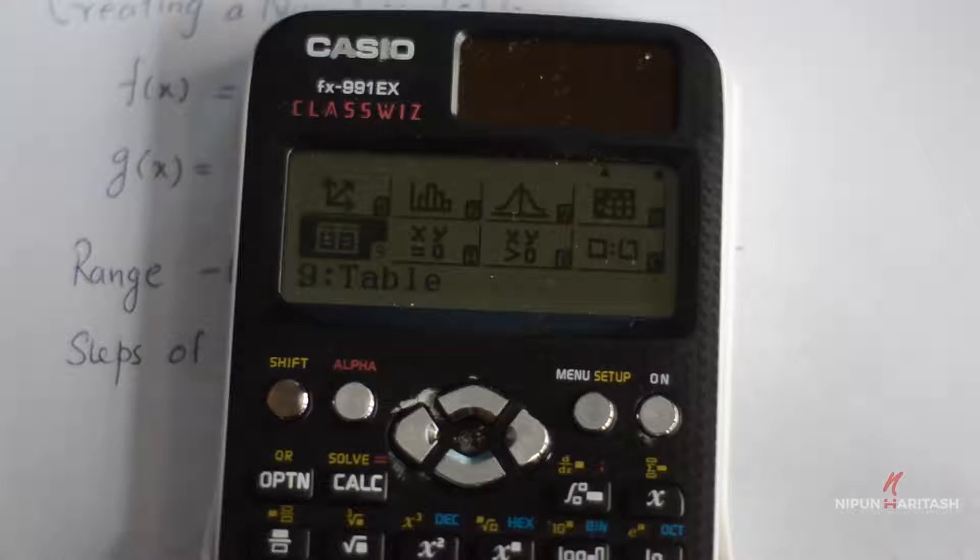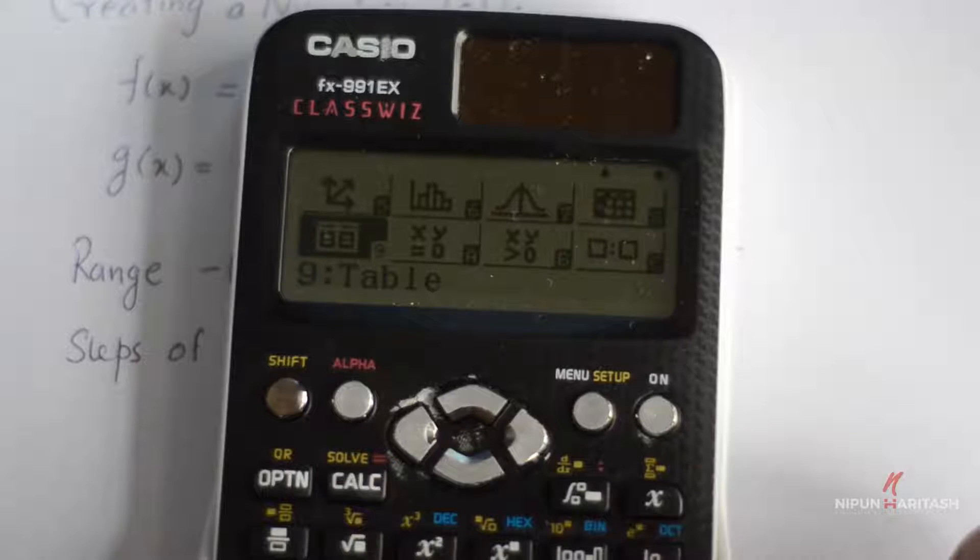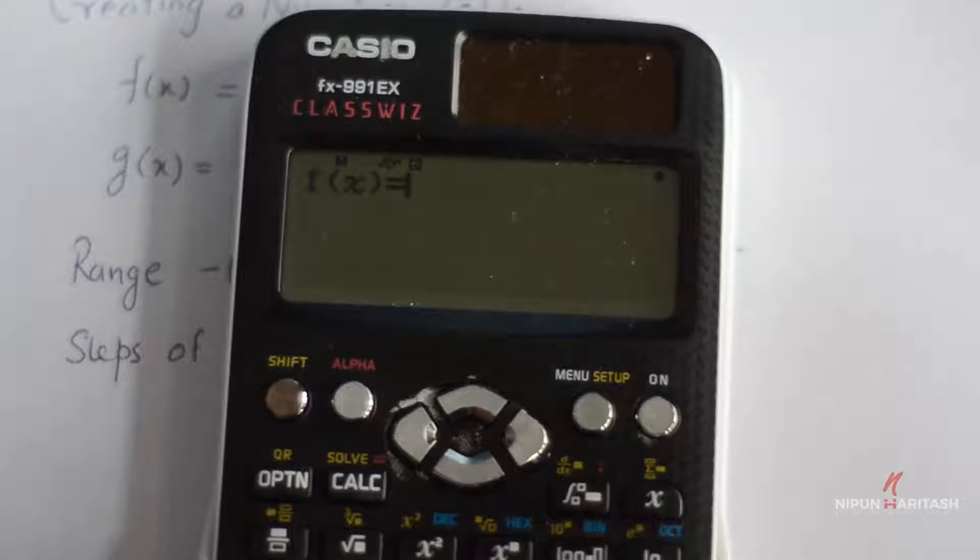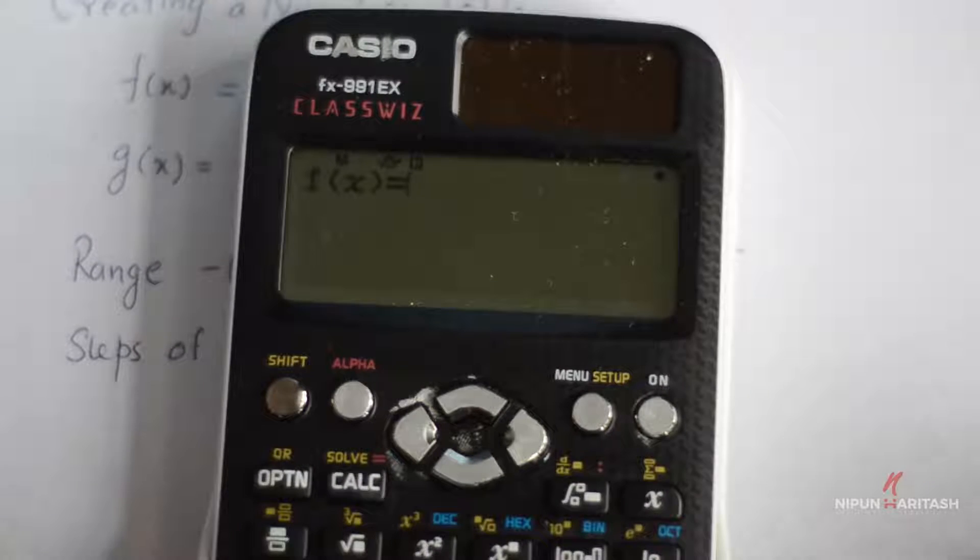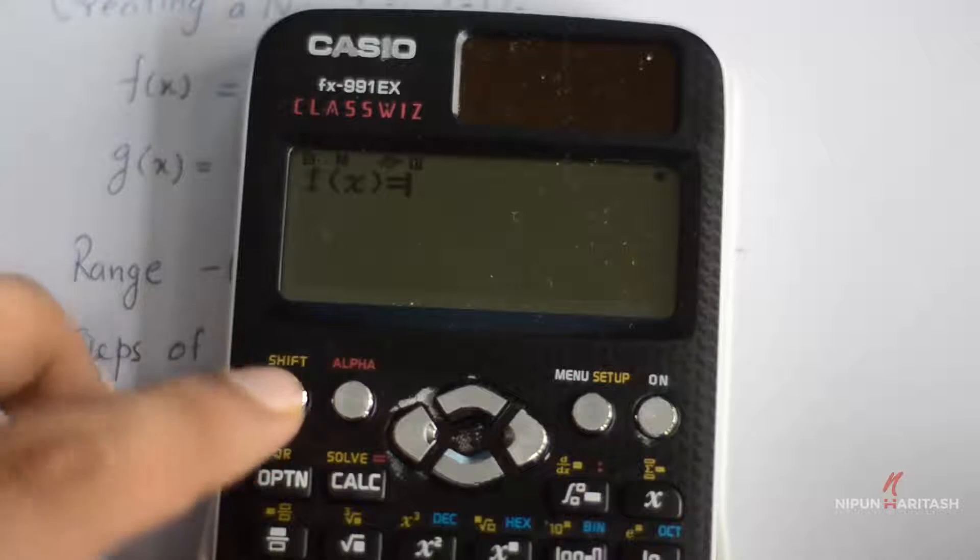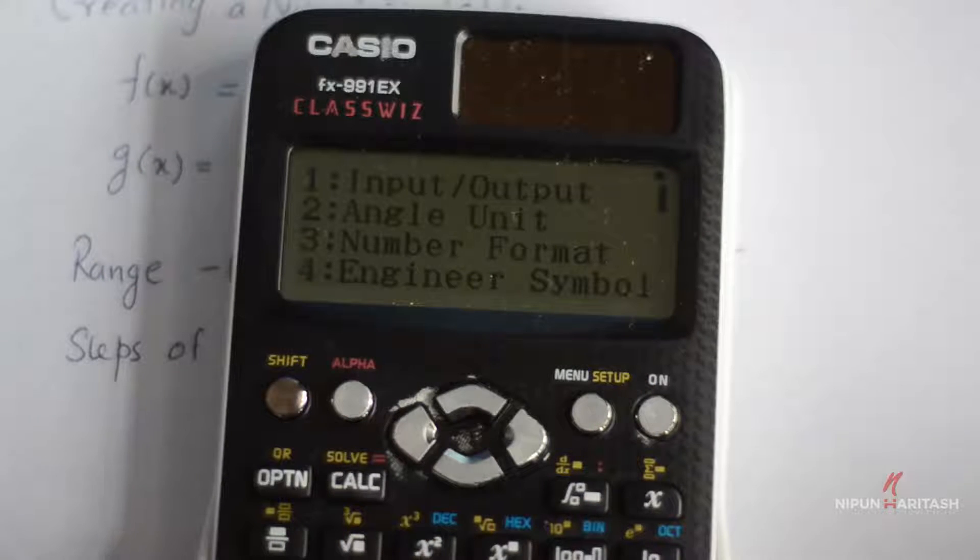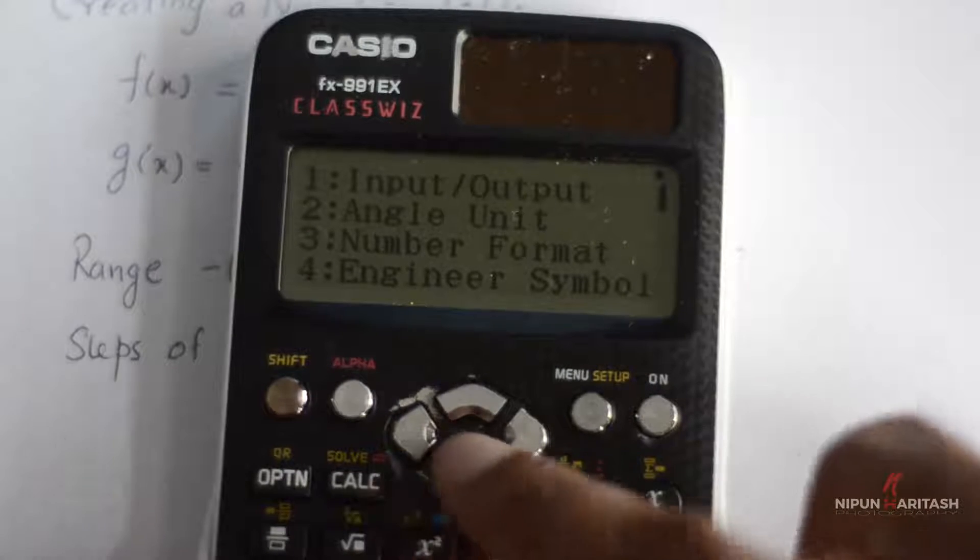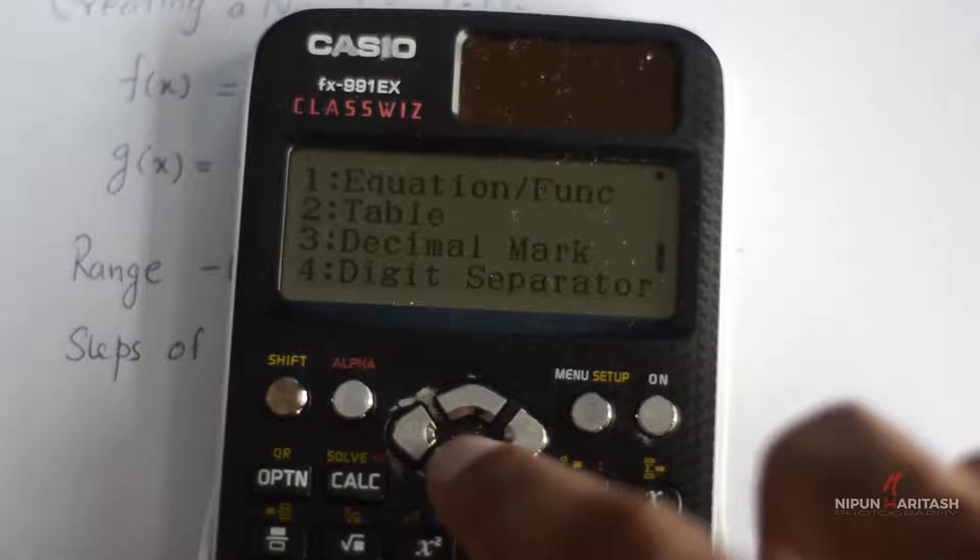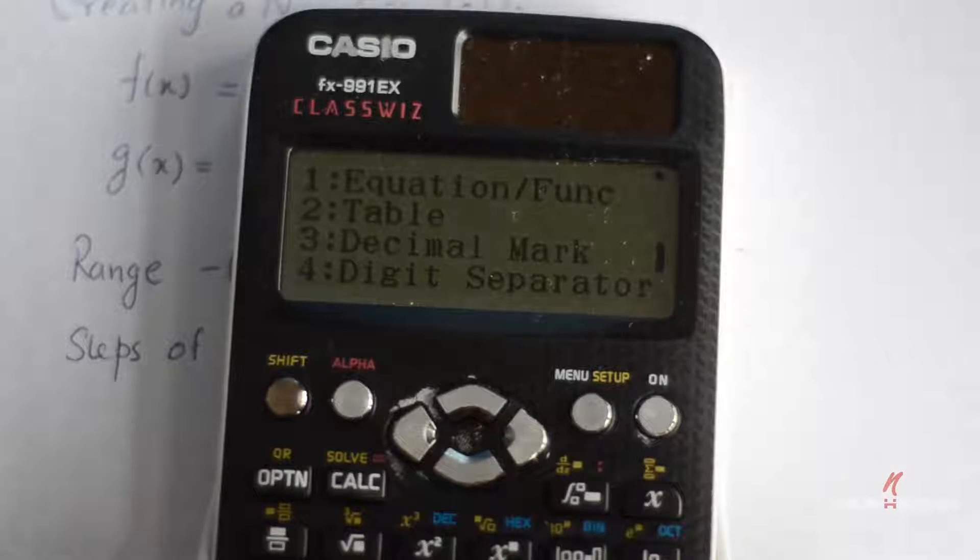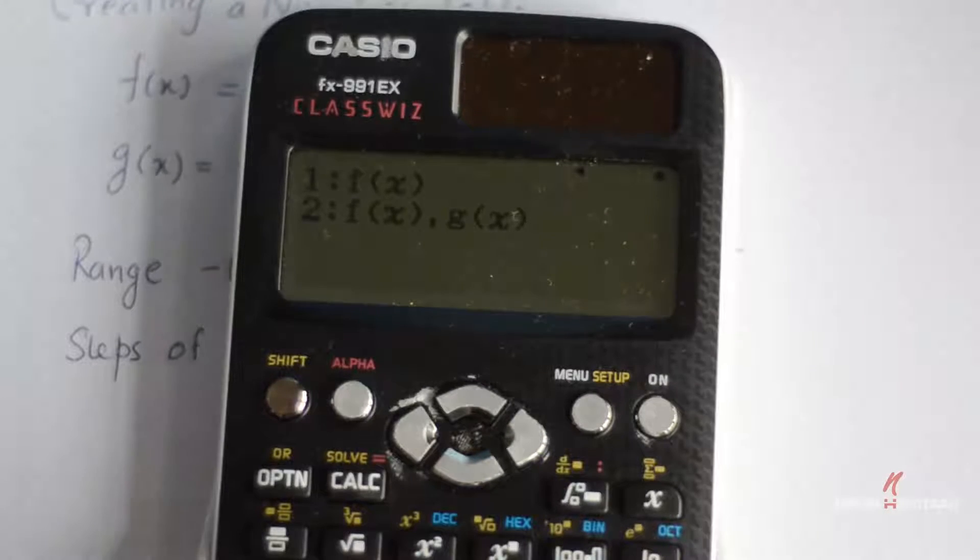You can press 9 or press the equal sign to go into table. Now here you need to press shift and then menu and then you could scroll down to the option of table, press 2 and it will ask you to make a choice whether you want to work with one equation or two equations.